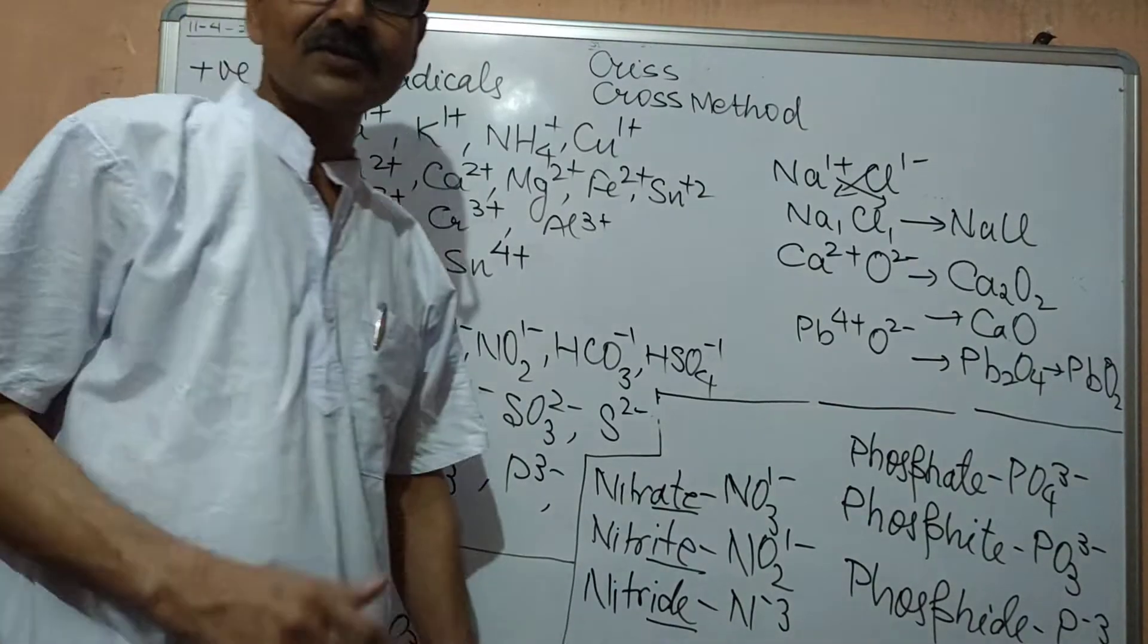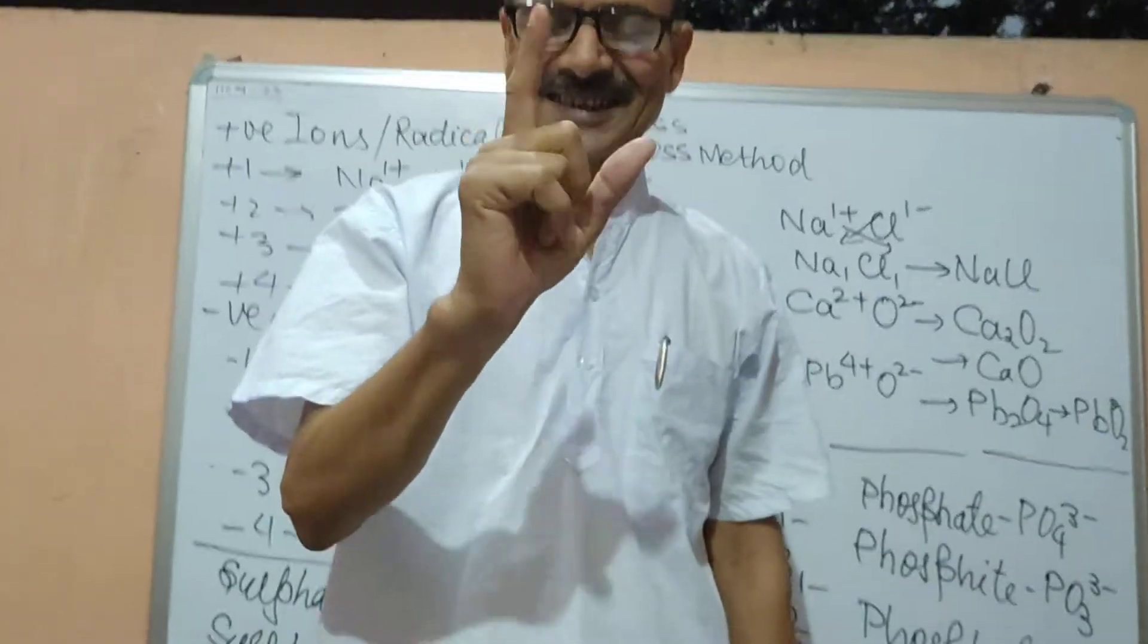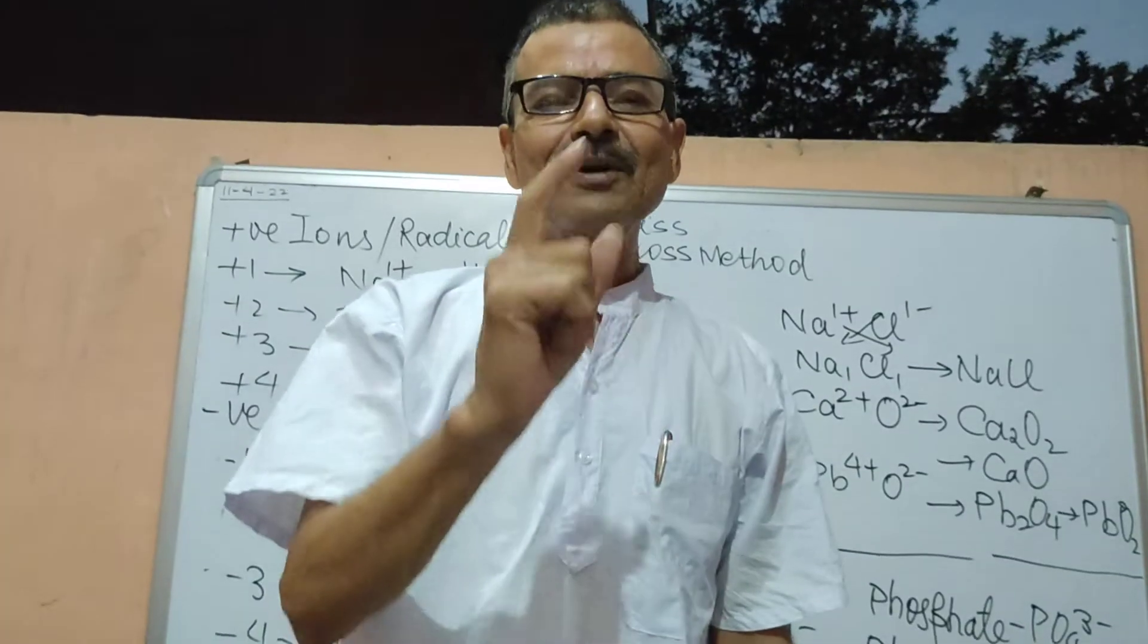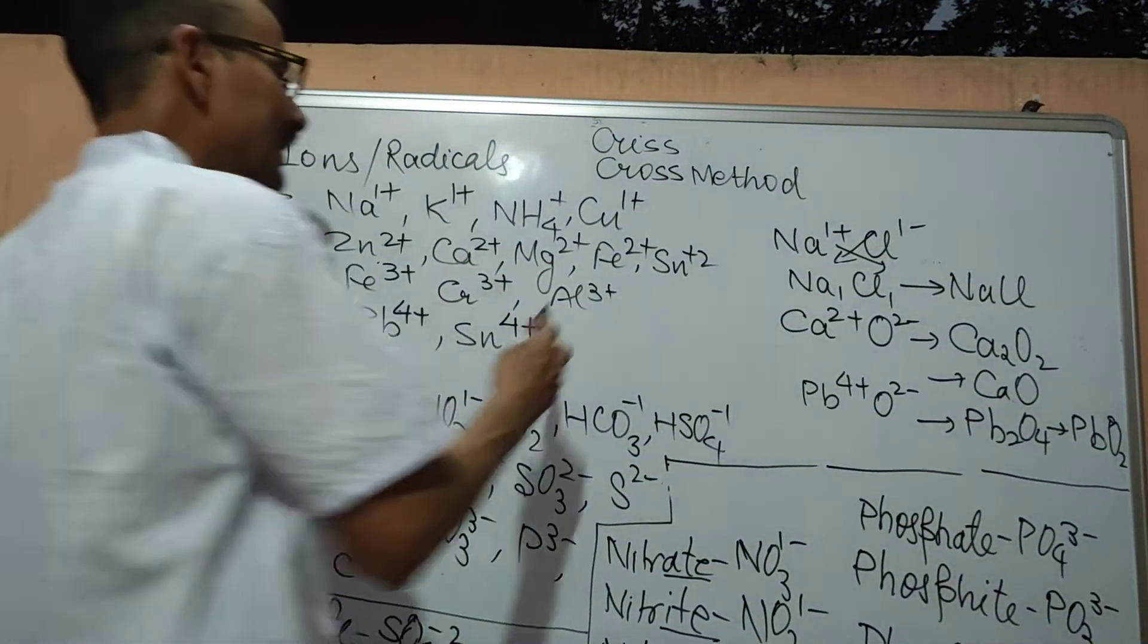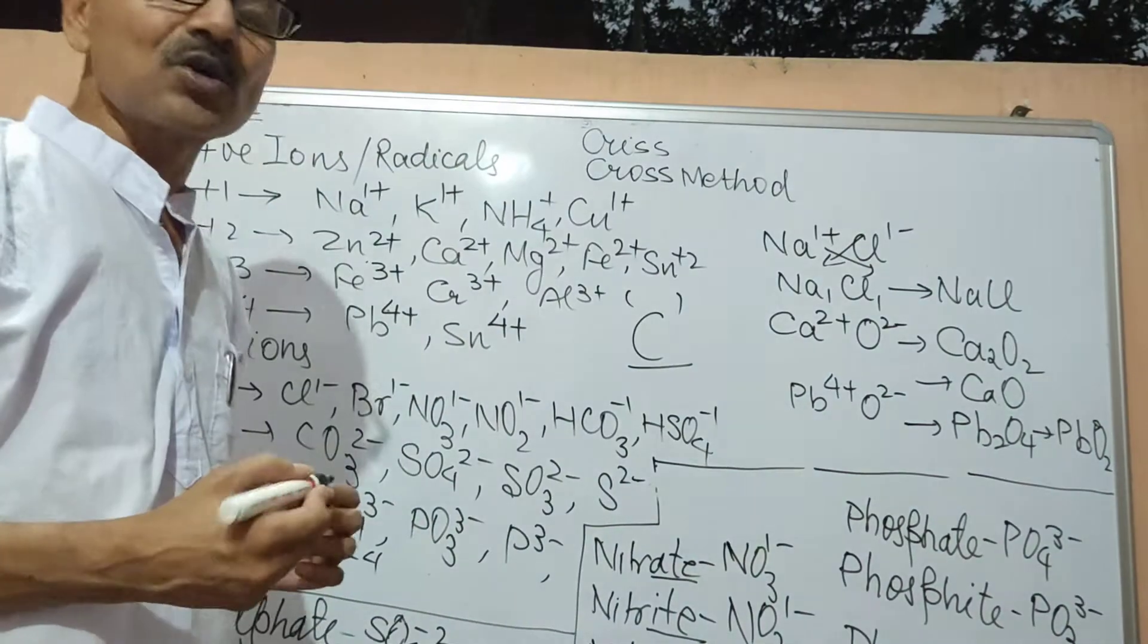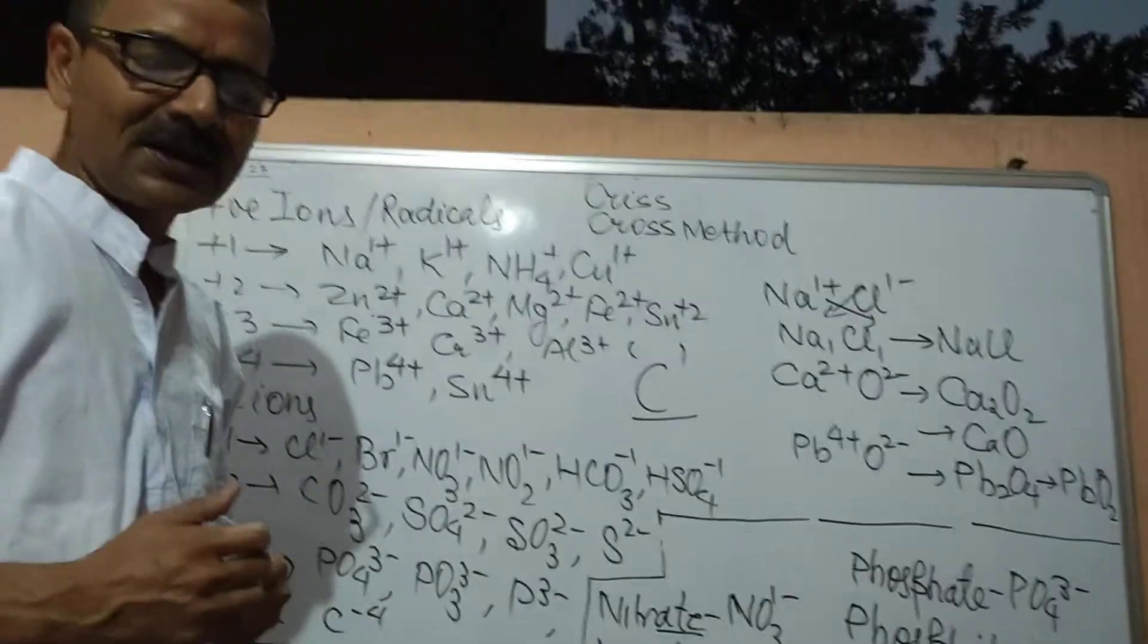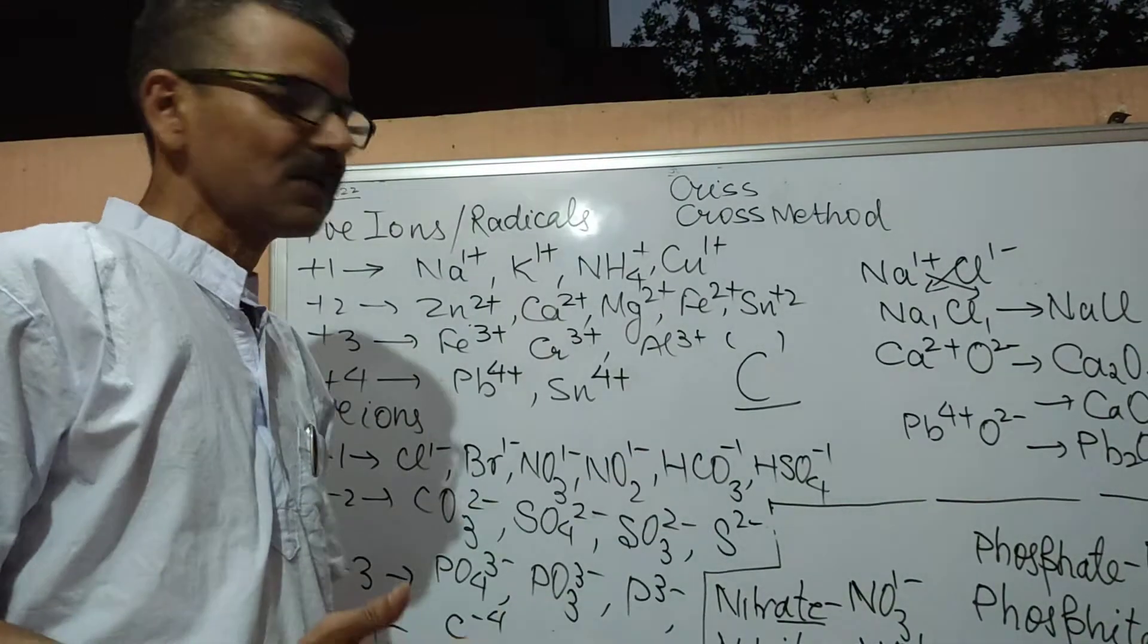Now at the end, please don't forget to subscribe my channel. One thing more. The symbol for diamond. Symbol for diamond is C. Symbol for diamond is C. It is an allotrope of carbon and all the allotropes have the same abbreviation. Whether it is a diamond, graphite, fullerene, all of them have the symbol C.